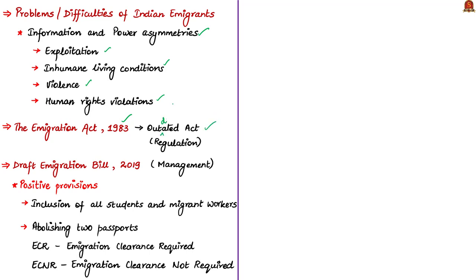They tell that it was an act formulated with the mindset of the 19th century and enacted in the 20th century, but implemented in the 21st century. In the last 35 years, the government has noted that the nature, pattern, directions and volume of migration have undergone a paradigm shift — meaning that Indians are emigrating in large numbers for different purposes to different countries across the world.